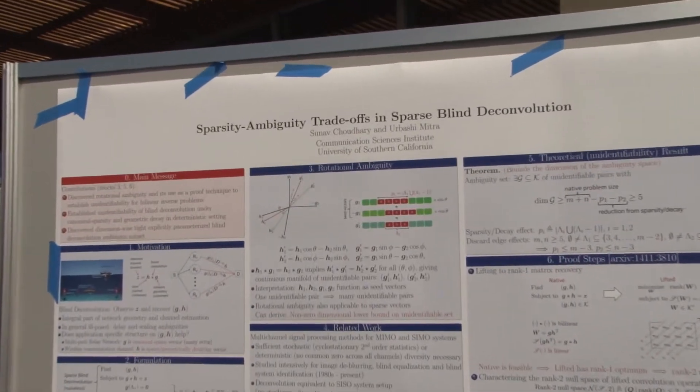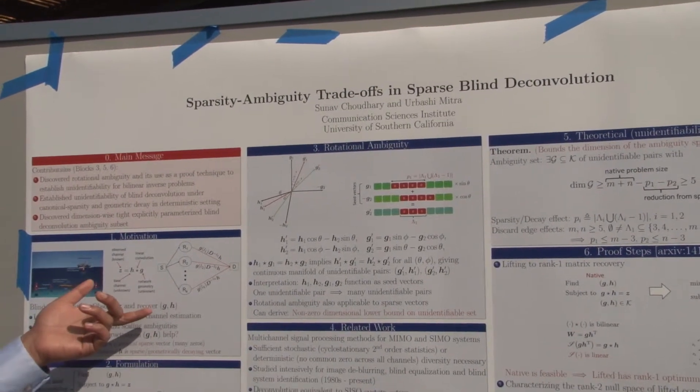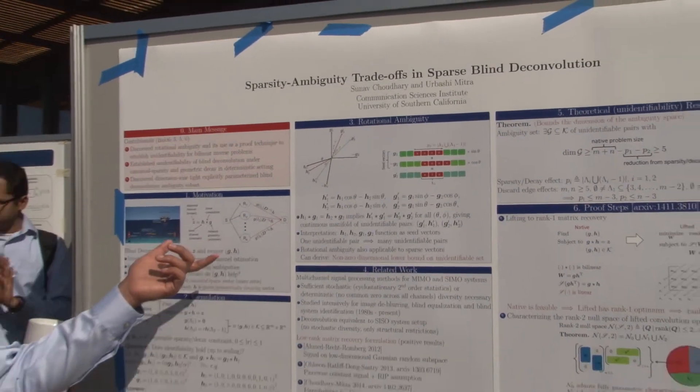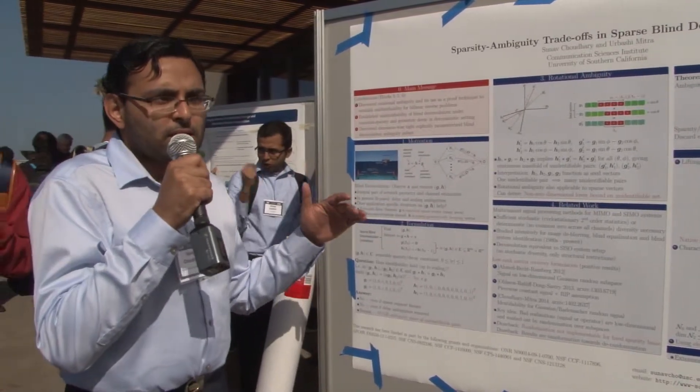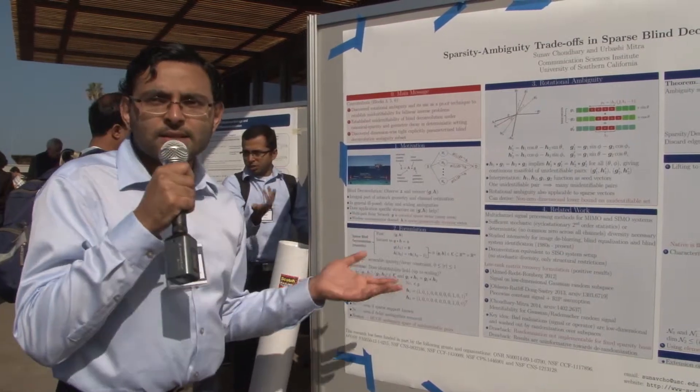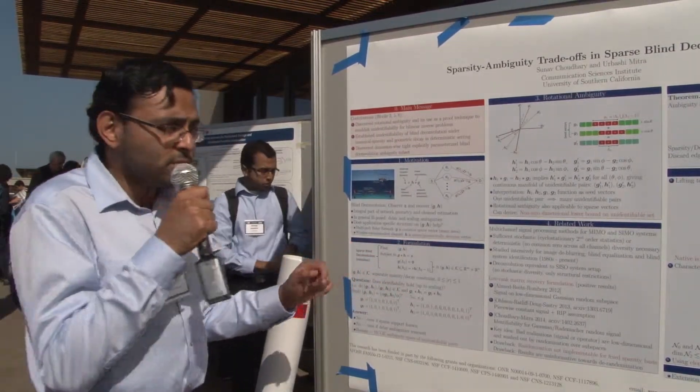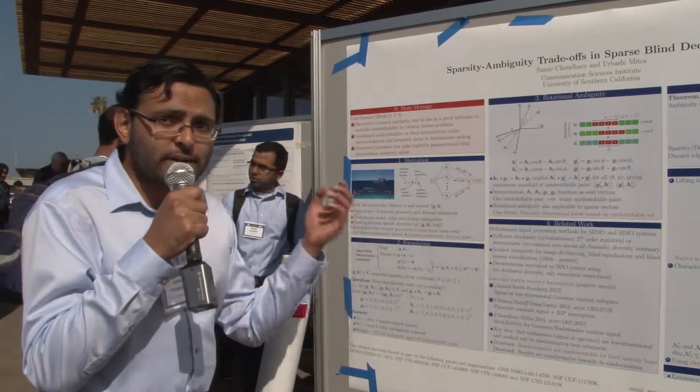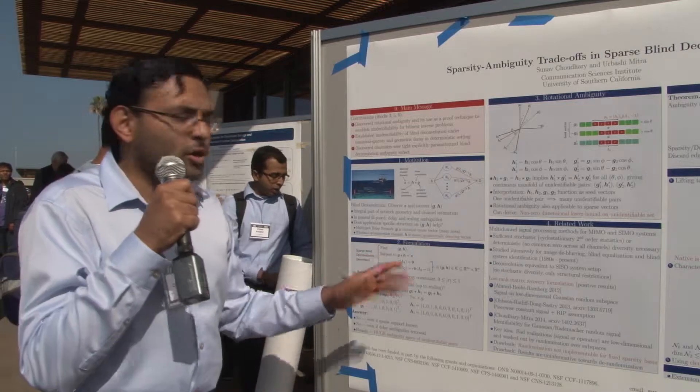What we try to do in this problem is analyze what happens to the blind deconvolution problem under sparsity constraints. In particular, we know that blind deconvolution is ill-posed with no additional assumptions, but does it get better posed as you impose sparsity in canonical basis as prior information on your unknowns?